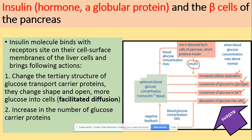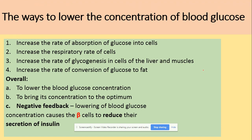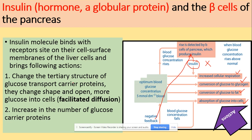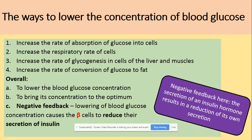Once the concentration of glucose falls, negative feedback is sent so the beta cells of the pancreas no longer detect any change, and the secretion of insulin stops. The negative feedback here is the fact that the secretion of the insulin hormone results in the reduction of its own secretion. No more insulin will be secreted because there is no longer a need to lower the blood glucose concentration.